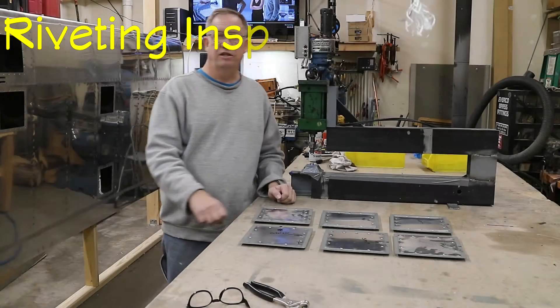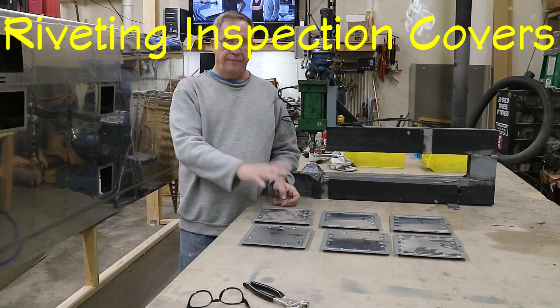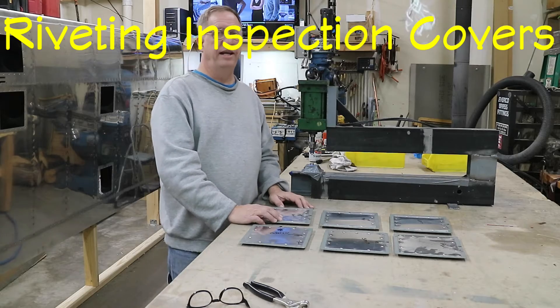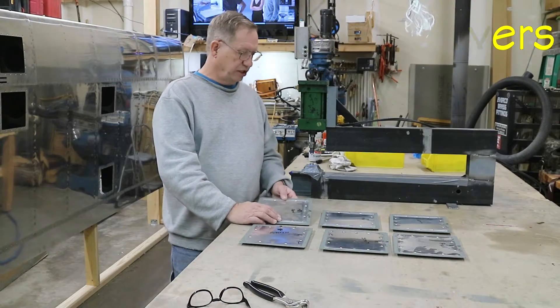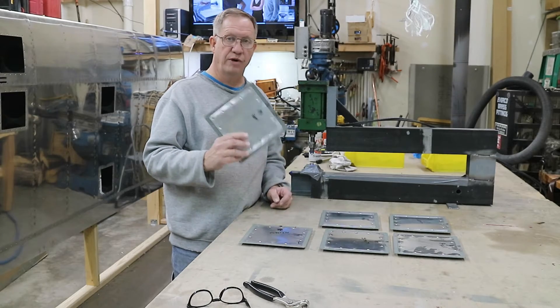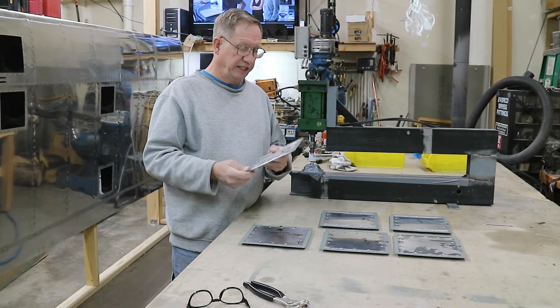I'm going to get started on putting the inspection covers on the wing. There's six of them, and I fitted them up with the sheets on the workbench, and then I fitted them to the rings. So that's where they sit right now.